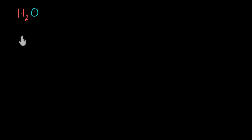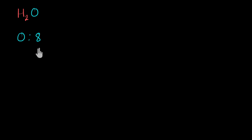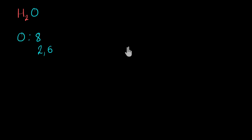Oxygen's atomic number is eight. That means in a neutral atom of oxygen, there are going to be eight electrons going around it. Its electronic configuration is 2, 6. That means there are six electrons in the outermost shell of oxygen. Let me try to draw it — oxygen with six electrons around it.